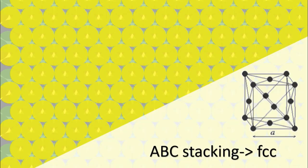Another way is to put the atoms on top of the cracks of the two layers. This is the so-called ABC stacking, which results in a FCC lattice.